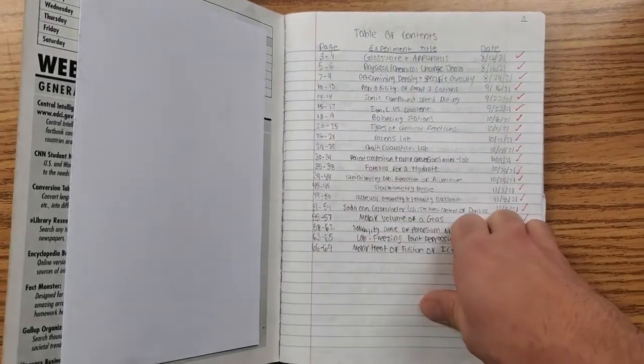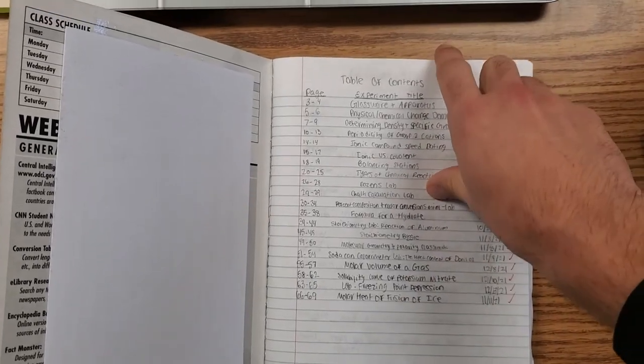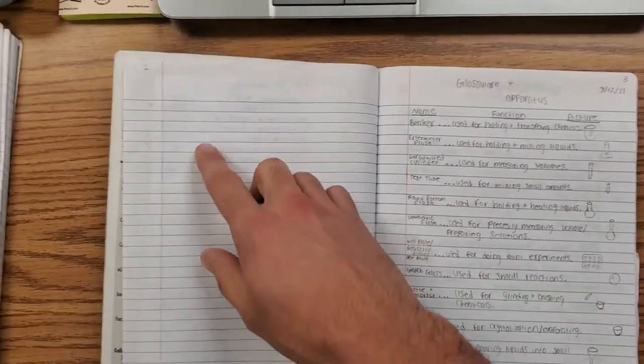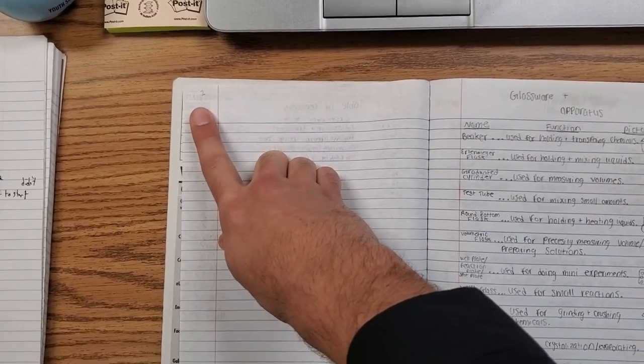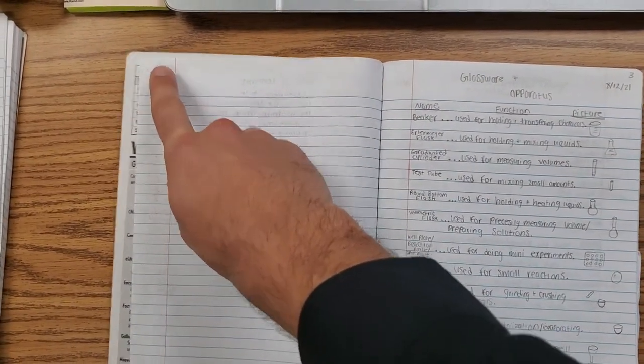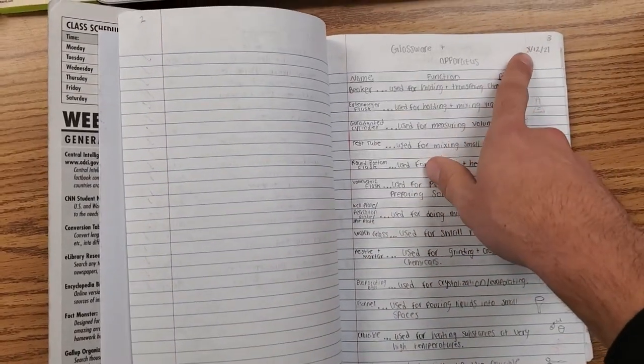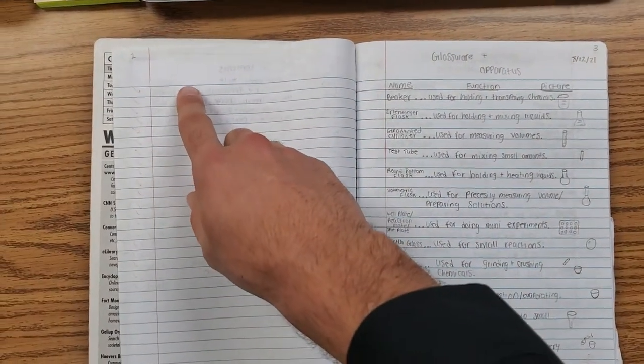You can go through and go ahead and number a bunch of these pages. Notice we start on page 1 on the top right corner. Page 2 number goes up here. The page number always goes on the top outside corner. So you can just go through and number all of your pages. Odd numbers should always be on the right, even numbers are going to be on the left.